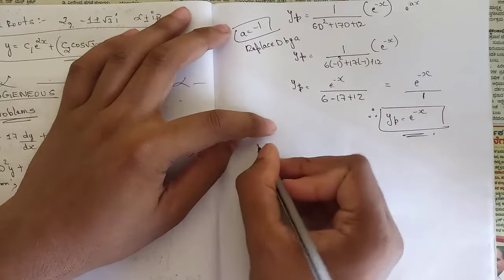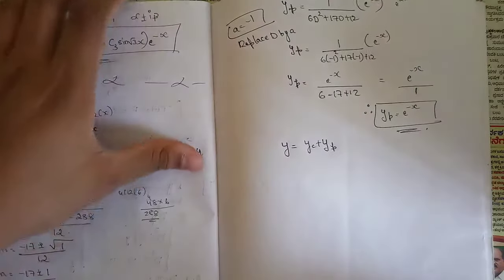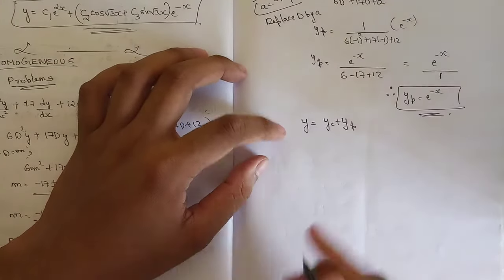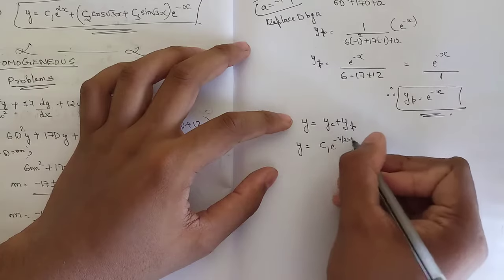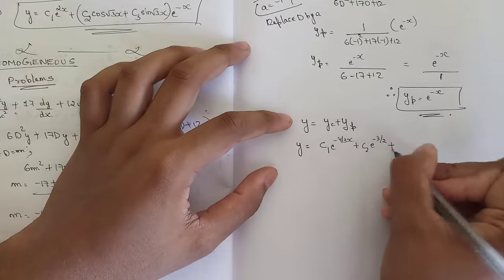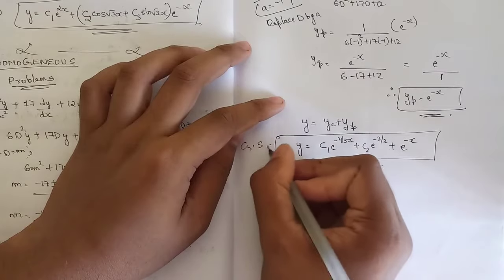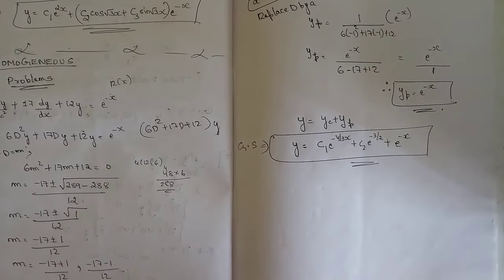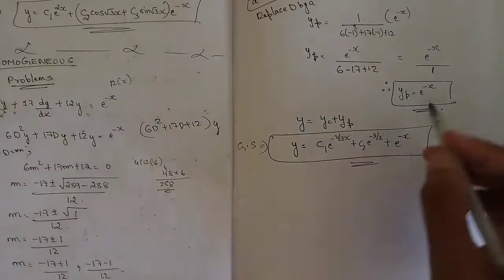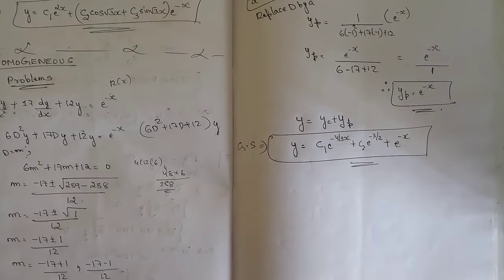To write the general solution: y = yc + yp. The final general solution is: y = c₁·e^(-4x/3) + c₂·e^(-3x/2) + e^(-x). In the homogeneous part, yc alone was the general solution. In the non-homogeneous case, we sum yc and yp to get the final answer. We will now solve a few more problems.